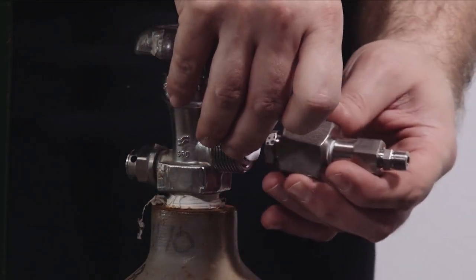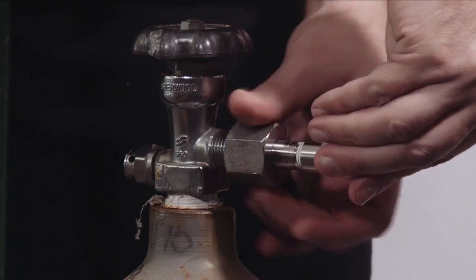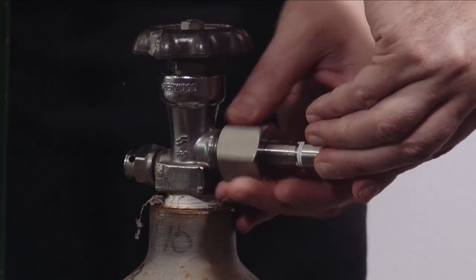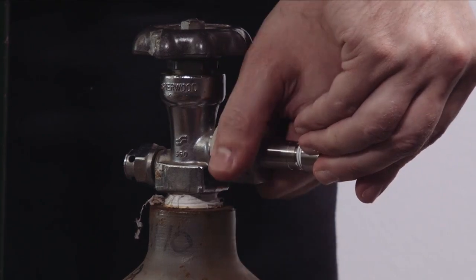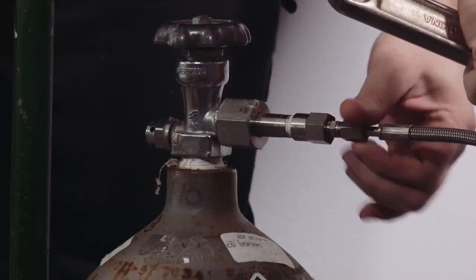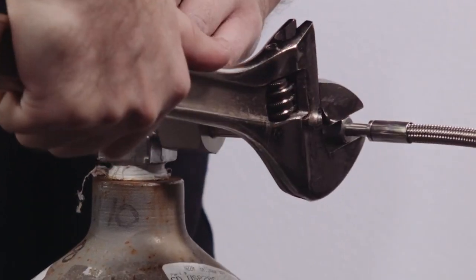Connect the gas cylinder next. First, secure the cryogen cylinder correctly upright. Next, connect the high-pressure hose to the cylinder using the appropriate adapter.